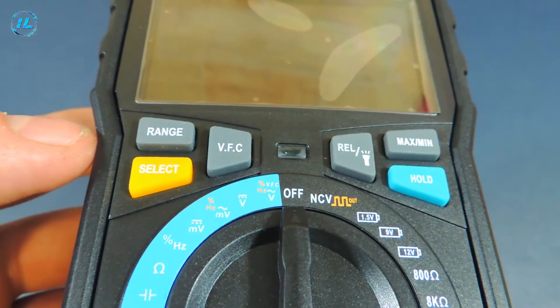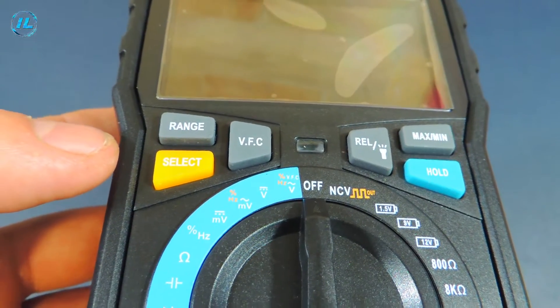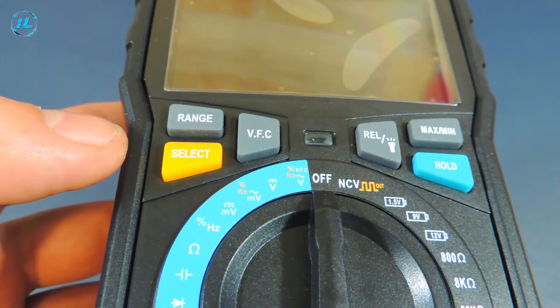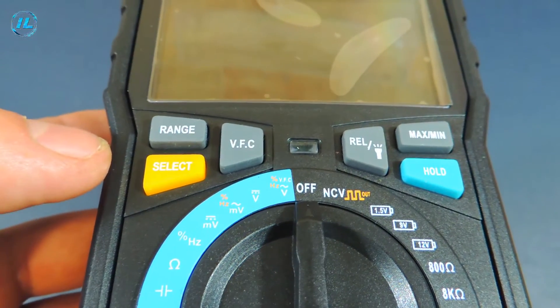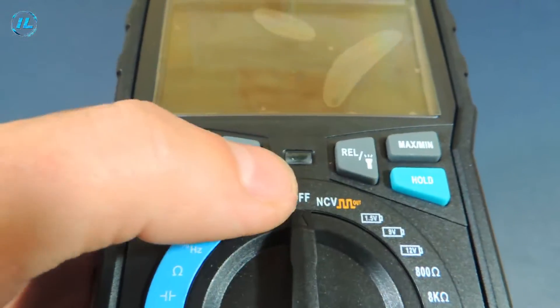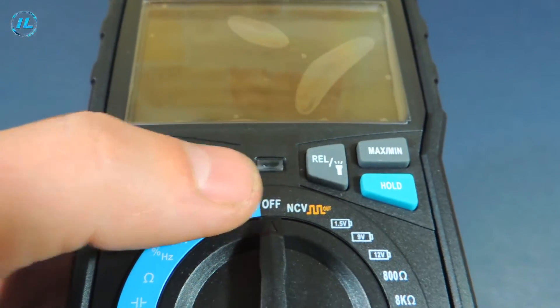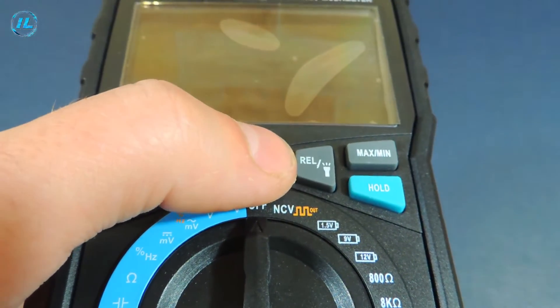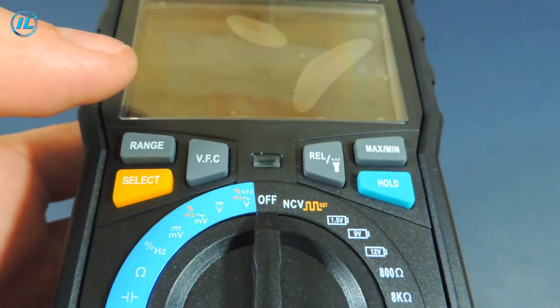The next button turns on a function that not every multimeter has. This is a VFC feature. In fact, it is a low-pass filter. It cuts off voltage fluctuations and results in more accurate measurements. An electric field indicator is located in the middle.